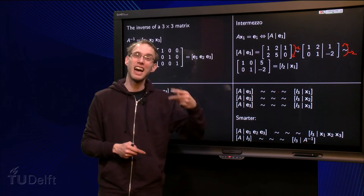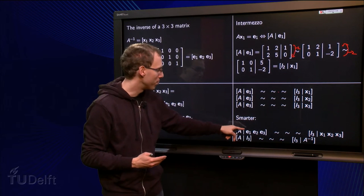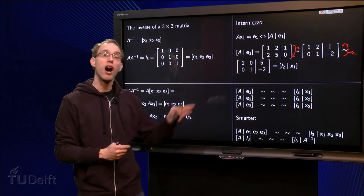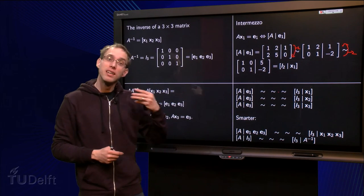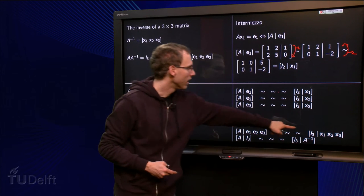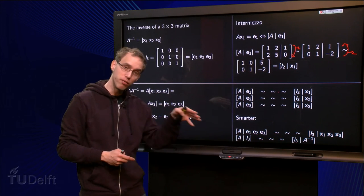What we do is we form the augmented matrix A, but we augment it with the three right hand sides at the same time. We put e1, e2 and e3 next to each other after the bar. Then we do the row reductions.